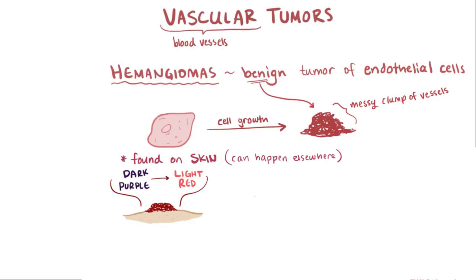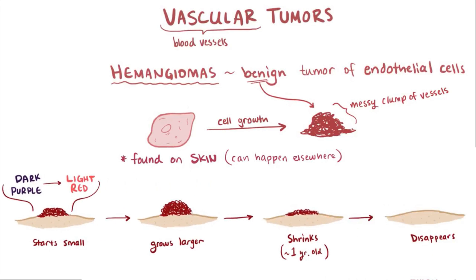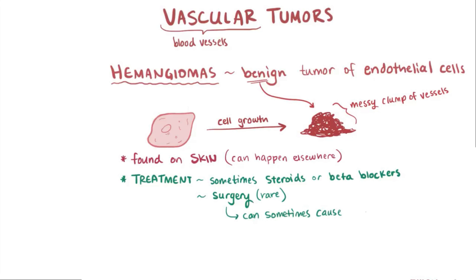This tumor is sometimes seen in newborns but will usually disappear as they get older. They sometimes start out small, then grow larger before finally shrinking by the first year of life. About half of them disappear completely before age 5, and the rest usually disappear before the teenage years. Sometimes steroids or even beta blockers are used to help these regress, and only in rare situations is surgery needed. When it's clear that a tumor will regress on its own, removing it surgically can sometimes cause more permanent scarring than if it's left alone.